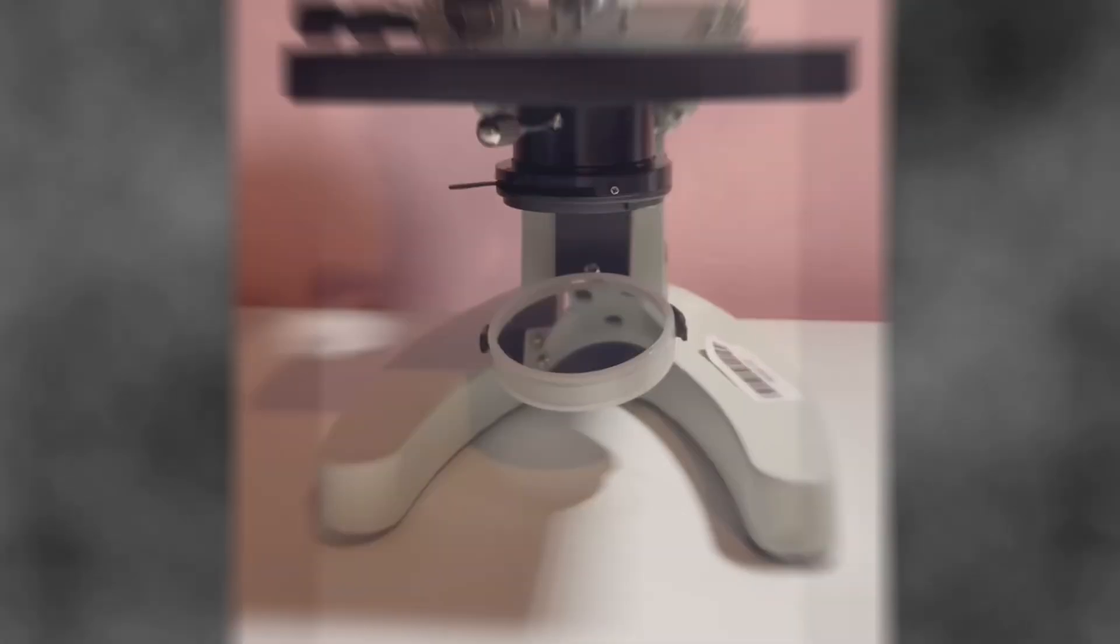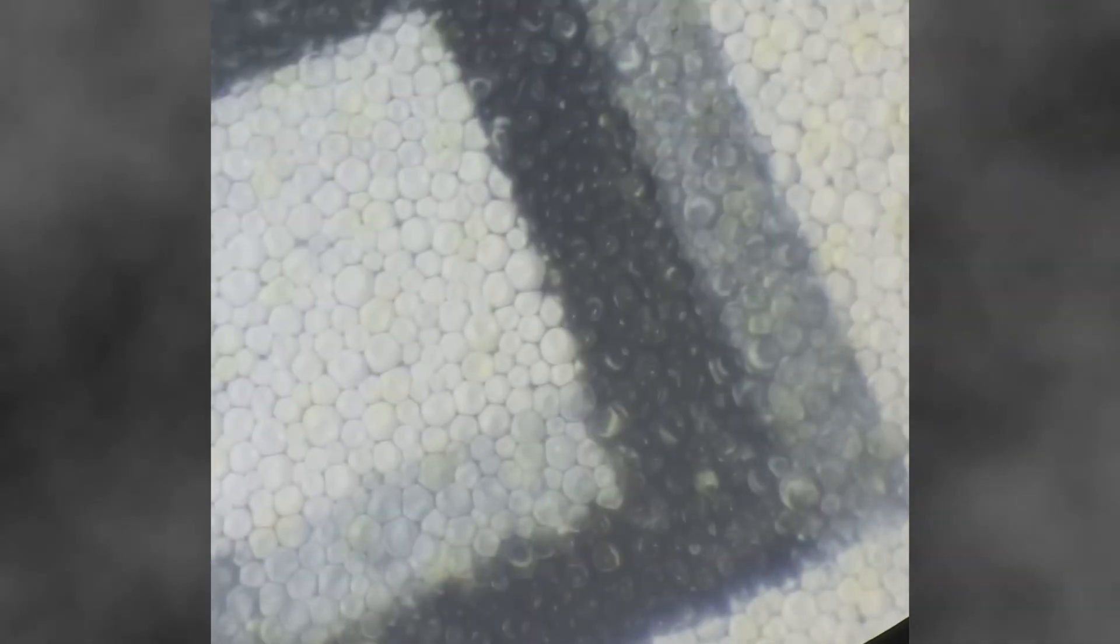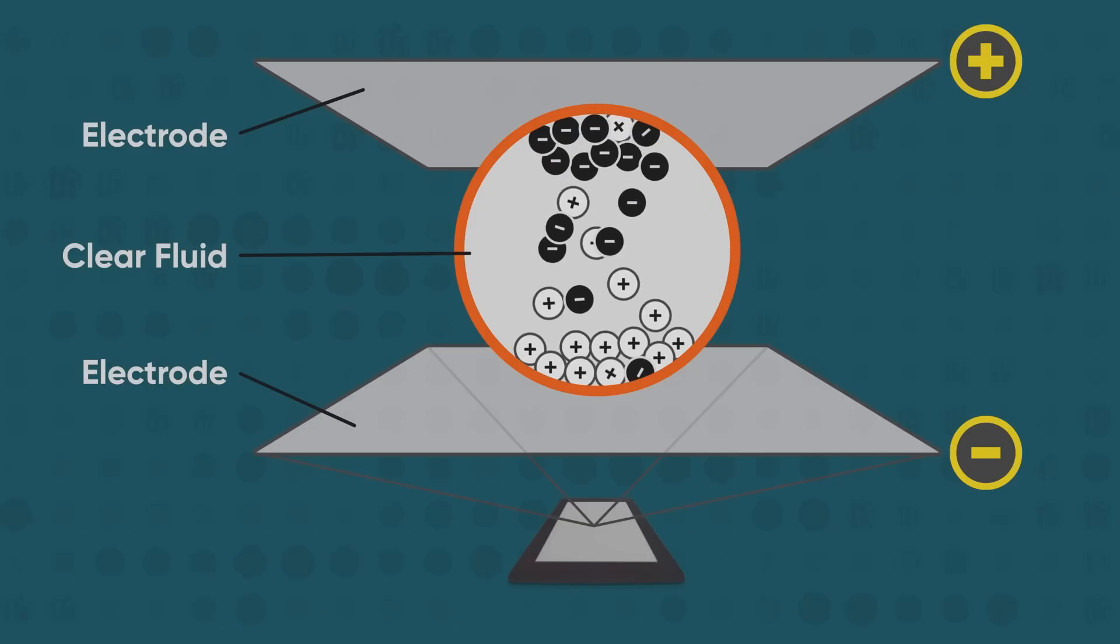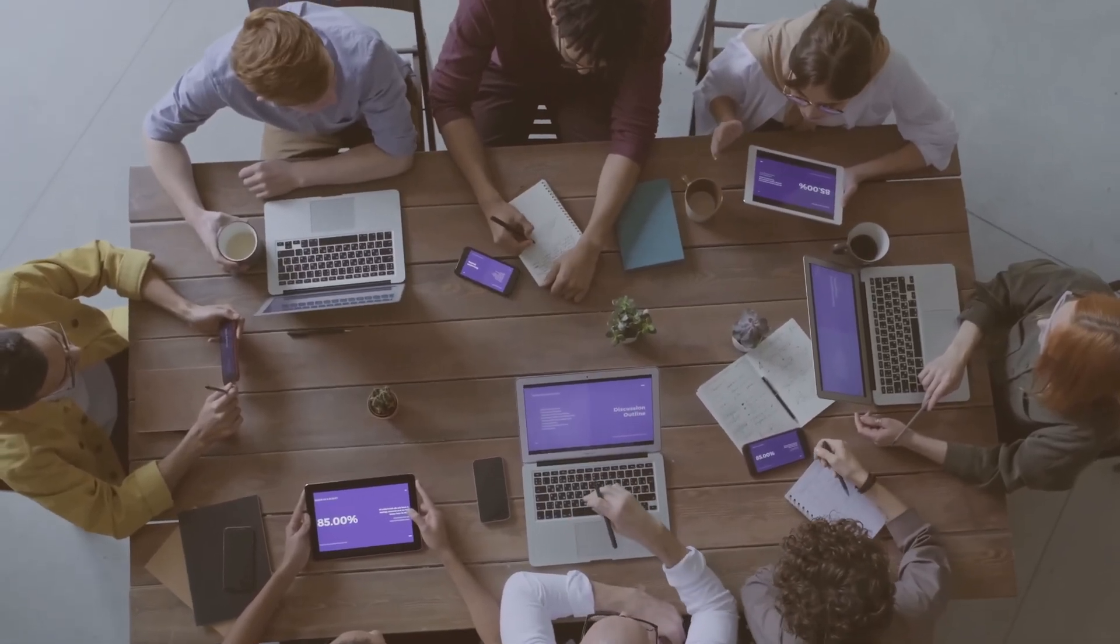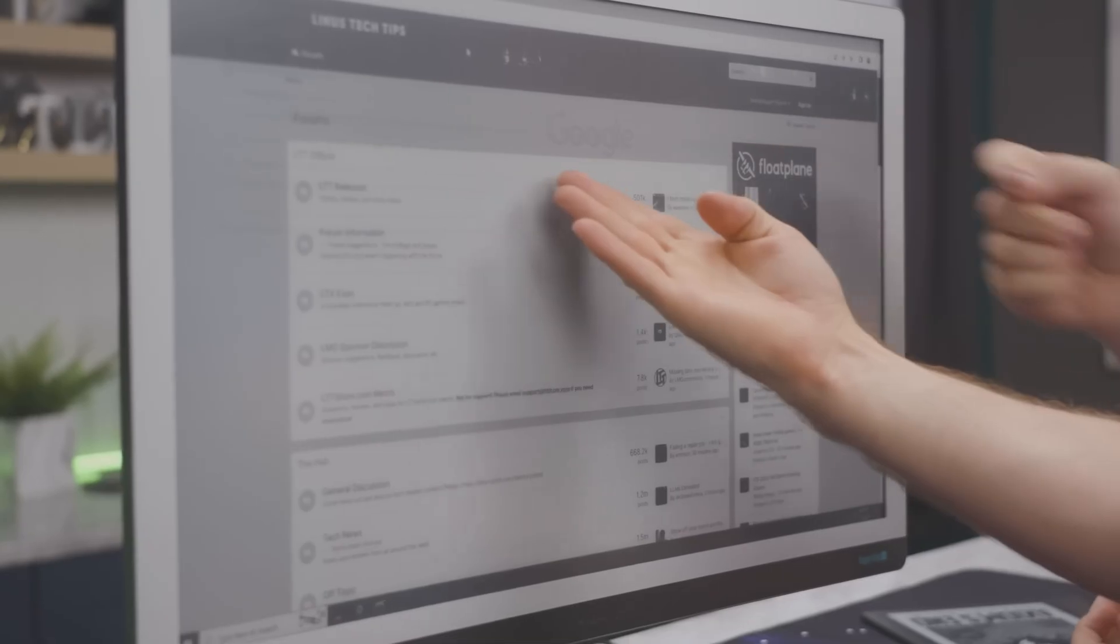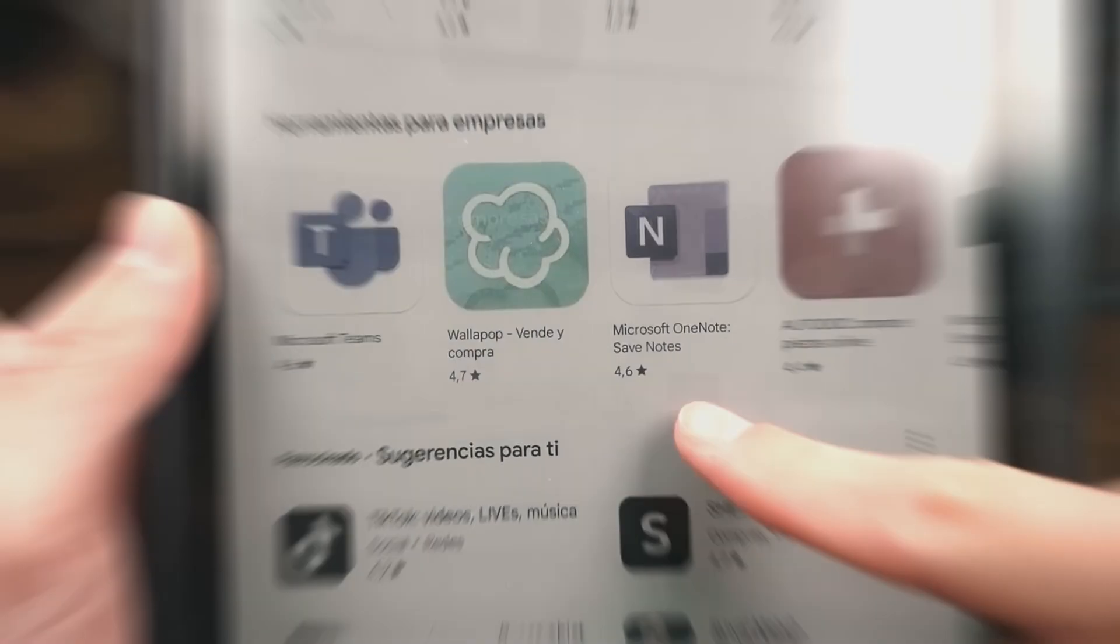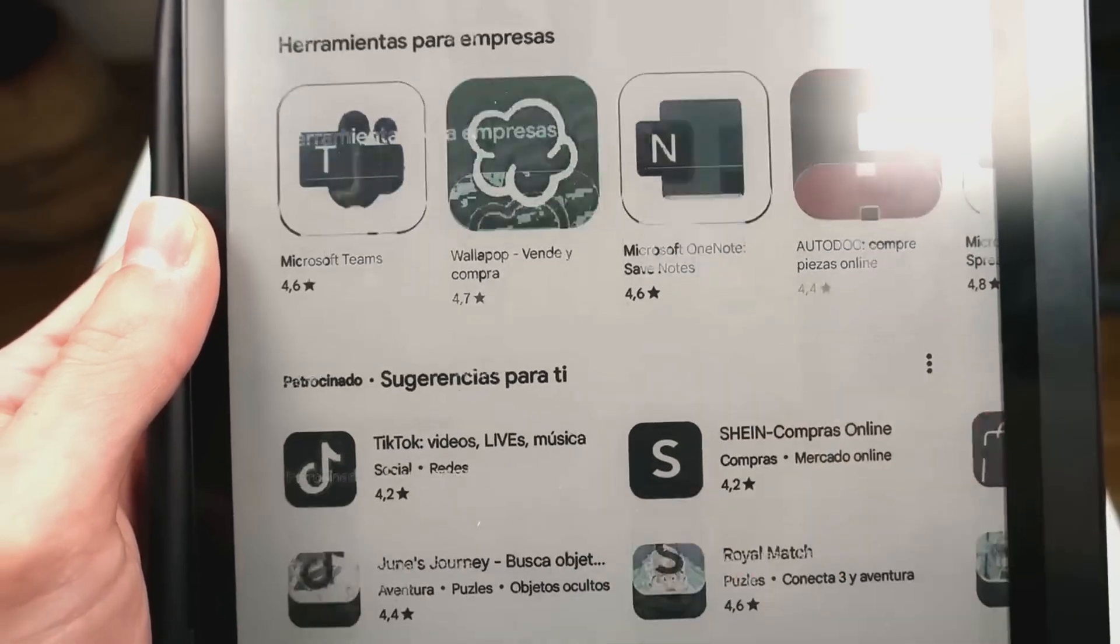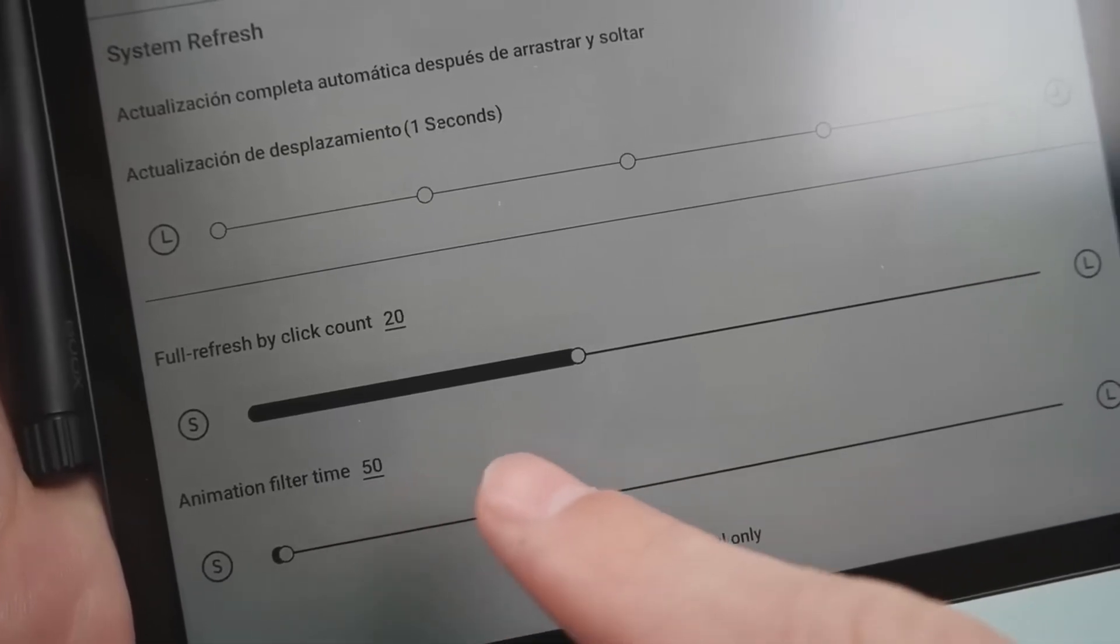So this technology seems perfect, right? It doesn't use power except when updating the screen. It saves a ton of battery and it's easy on the eyes. Wouldn't it be amazing if computer monitors use this technology? Well, they actually do exist. But there are two major problems. The first issue is color. So far, we've only talked about black and white displays. But what if we want color images? Well, color e-ink screens do exist and they use two main methods.